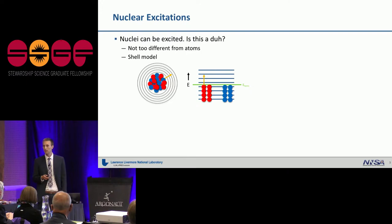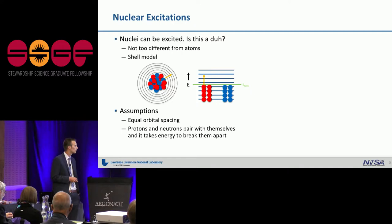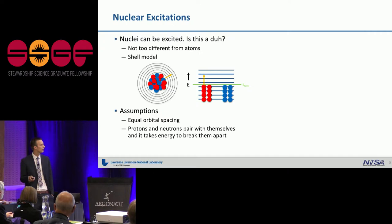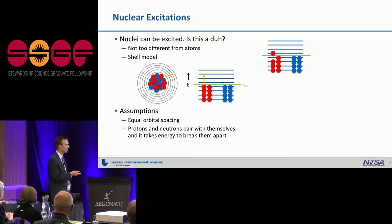And you have closed shells of nucleons that fill orbitals below the Fermi energy, and you can promote these nucleons up into higher orbitals to excite the nucleus. And what we assume when we model this series of excitations is that we have equal orbital spacings and that protons and neutrons pair with themselves, and then it takes energy to break them apart. It's pretty simple assumptions that go into our models. But then this tells us a lot of what we need to know when we average our models to generate data.